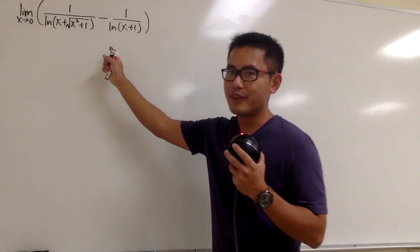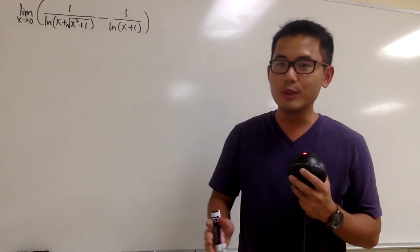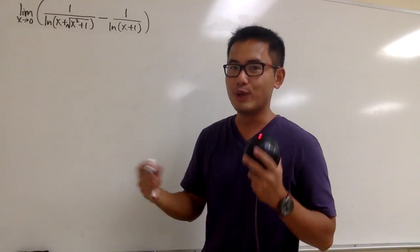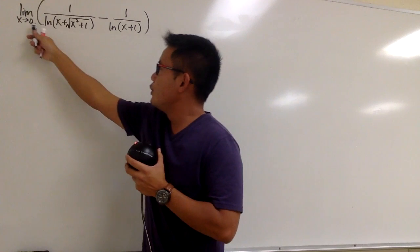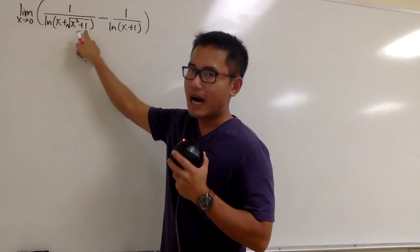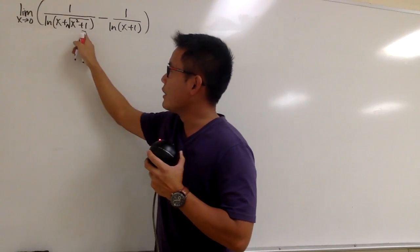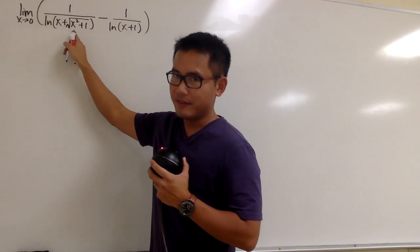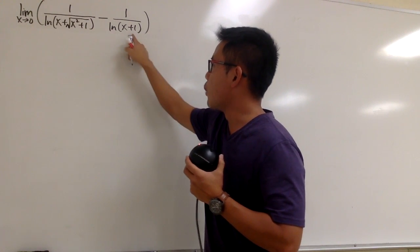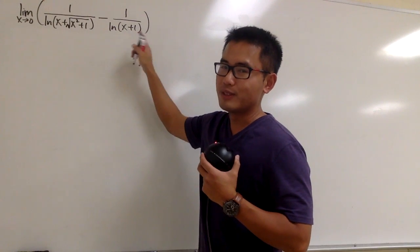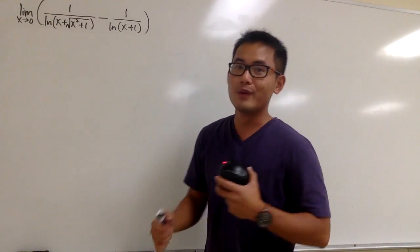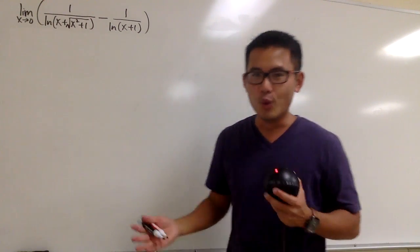We'll be calculating this limit. The first thing we should do is plug in 0 into all the x's to see what we get. When we do that, this gives us ln(1), which is 0, and 1 over 0 is infinity. Likewise, we also get ln(1), which is 0, and 1 over 0 is also infinity. So we have infinity minus infinity — we have to do more work for this.